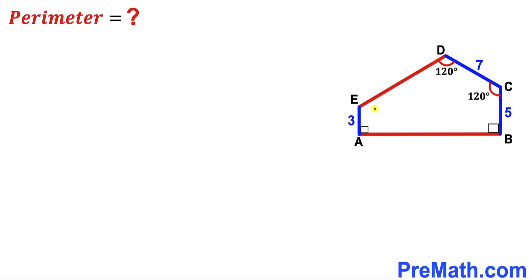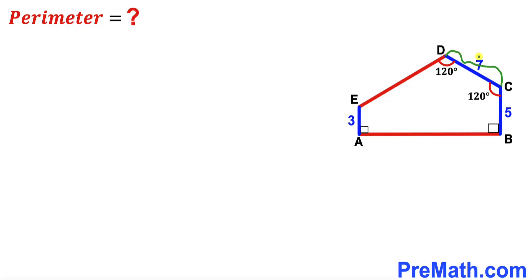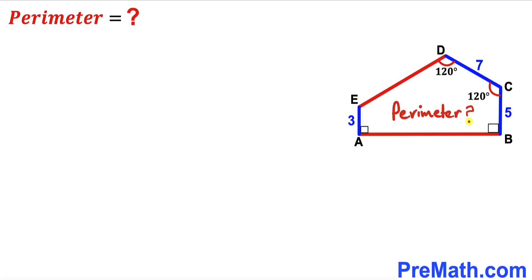Welcome to pre-math. In this video we have got pentagon ABCDE. Its side length AE is 3 units, the side length BC is 5 units, and this side CD is 7 units. Moreover, angle BCD is 120 degrees, whereas angle CDE is 120 degrees as well.